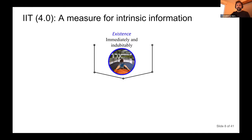The first property is not really a property but a property-holder: consciousness exists. Not only existence, but all the other properties should be immediate and inductable — meaning in a Cartesian sense that if you try to deny it you arrive at a contradiction. Existence is what Descartes already showed: if you try to deny it using itself, then you are using the very thing you're trying to deny.